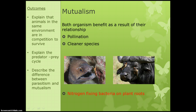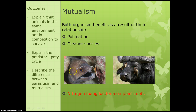Another good example of mutualism is cleaner species. Here we have a shrimp that lives in coral reefs — bigger fish will come into the reef, the shrimp climb on them and eat all the detritus on them. The fish comes out clean, so the shrimp get food and the fish gets cleaned.